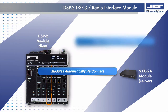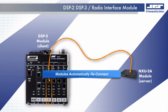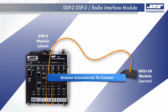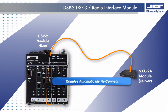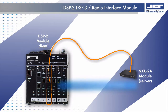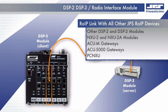Once the network is restored, modules will automatically link and re-establish the ROIP stream. Peer-to-peer devices include other DSP2 and DSP3 modules, NXU2A modules, and any JPS interoperability product or application that features ROIP can share voice communications over the network with the DSP2 radio interface module.